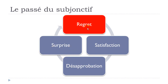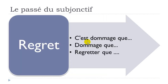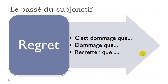For regret, we use structures like 'c'est dommage que' — it is a pity that — followed by the passé du subjonctif when expressing a past event. 'Dommage que' is the same but more spoken, as the subject and verb are dropped. 'Regretter que' also requires the passé du subjonctif when what follows refers to the past.